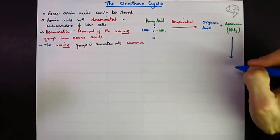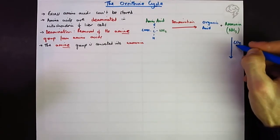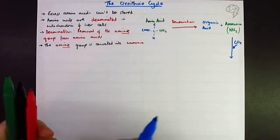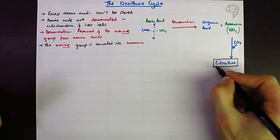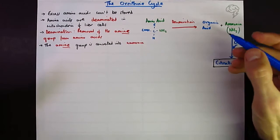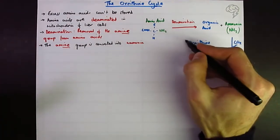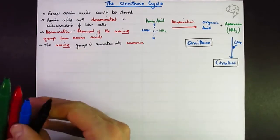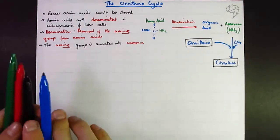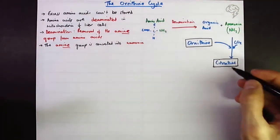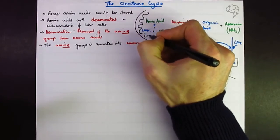To make the next compound, which is called citrulline, we need to add carbon dioxide. It's not quite that straightforward because we combine that with the compound which gives this cycle its name, called ornithine. Remember this is all happening inside the mitochondria of the liver cells. Ammonia plus ornithine plus carbon dioxide gives us citrulline, and this part of the reaction is all happening inside the mitochondria.